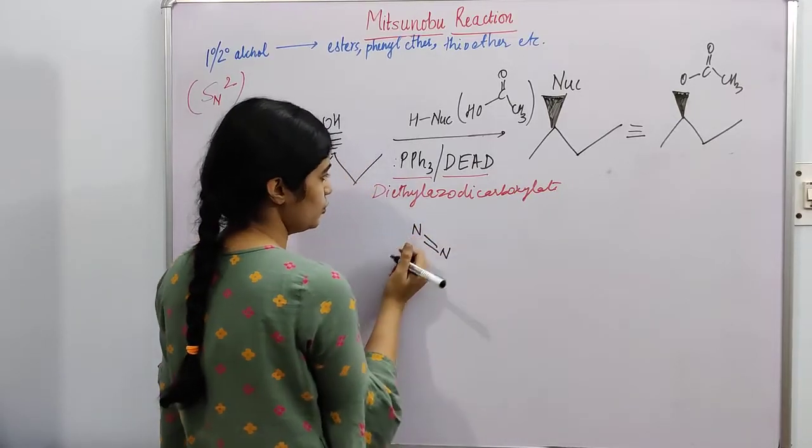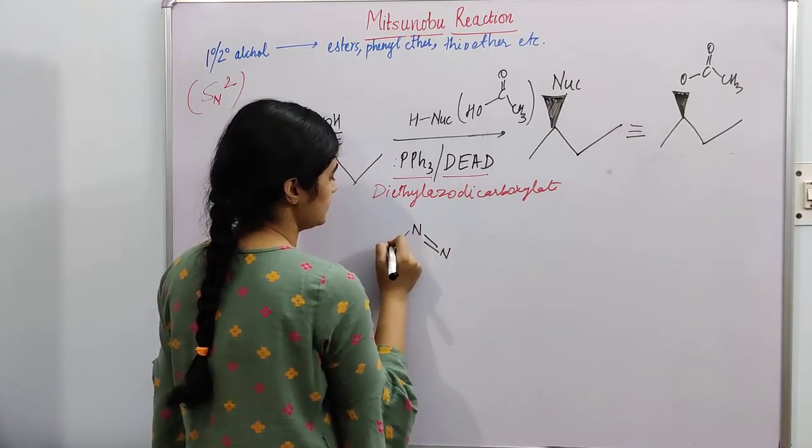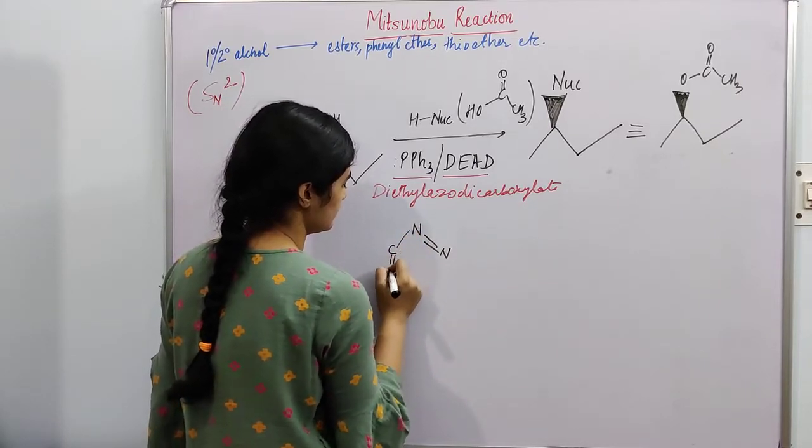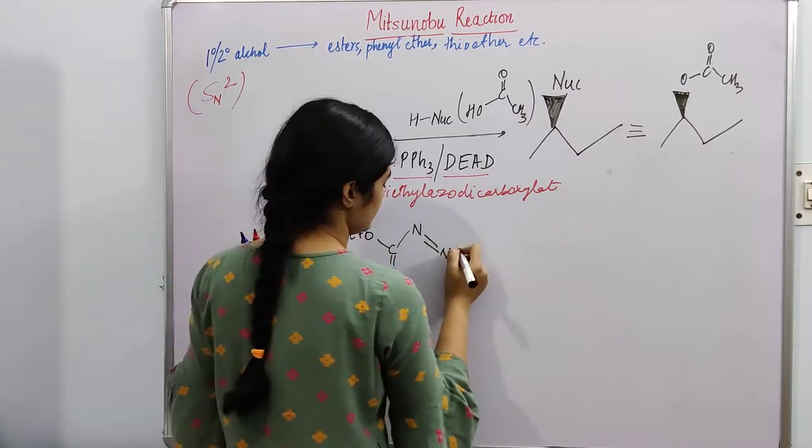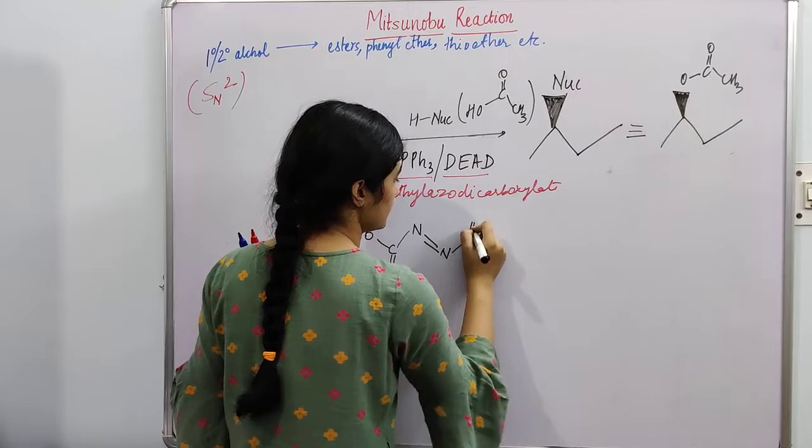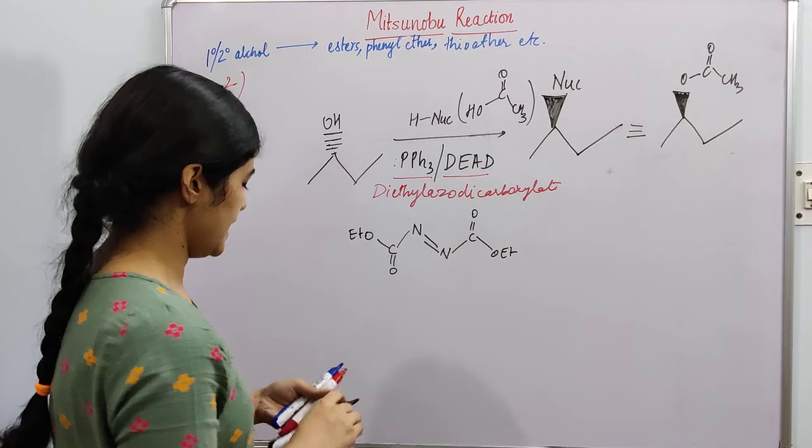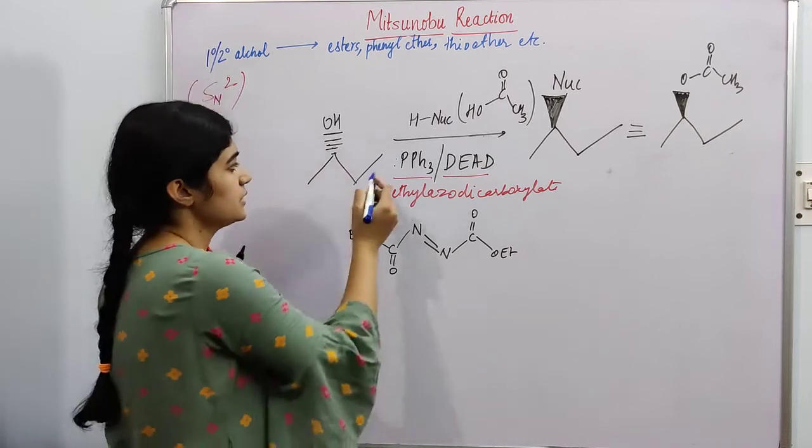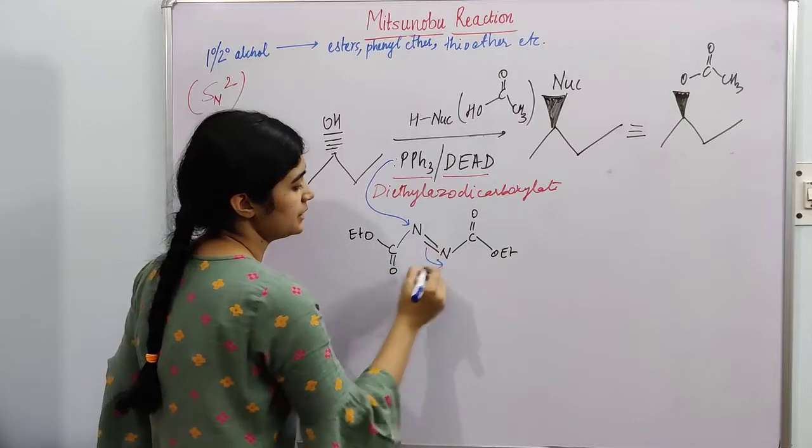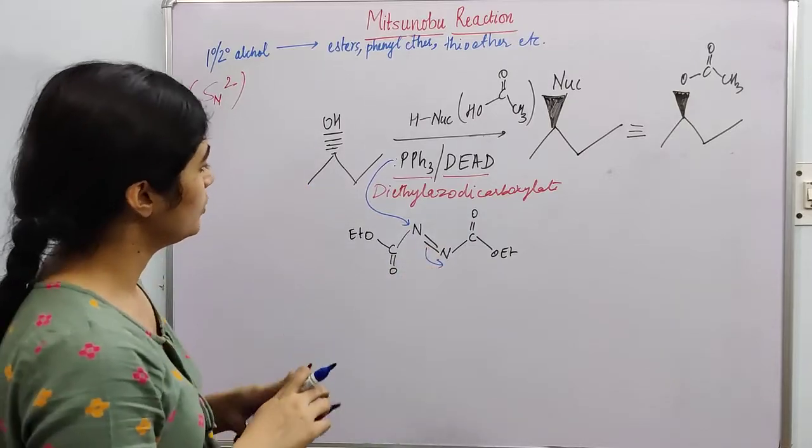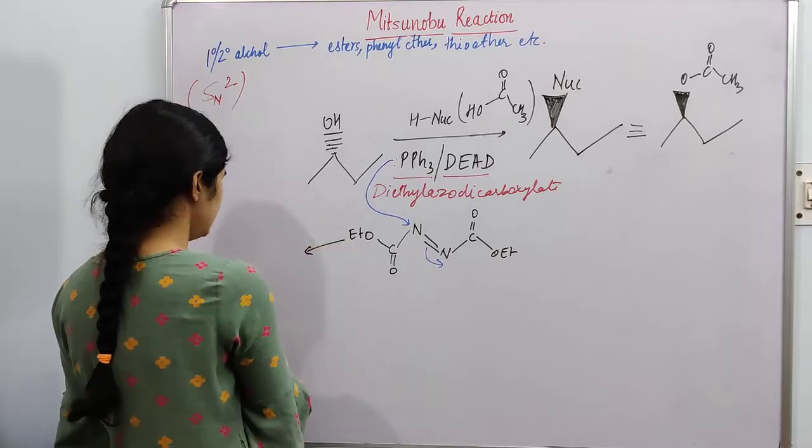This is our nucleophile. This is DIAD. So this is our compound DIAD. Now what happens, this lone pair will attack the nitrogen and you will get a product like this.